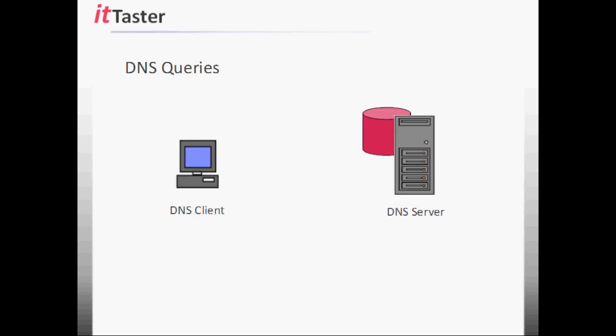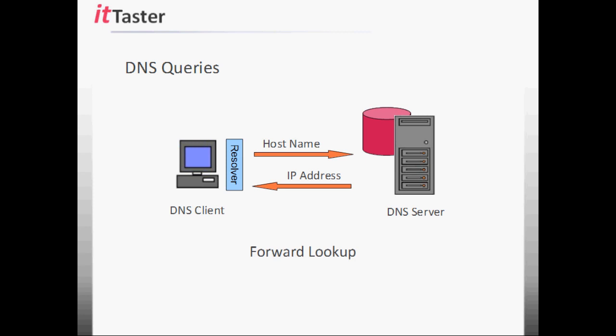In this example, a DNS client — in this case a PC — needs to resolve a computer name, a host name, to an IP address. DNS clients run something called a resolver. This is an application normally built into the operating system, and its job is to query the DNS server. The resolver sends a query to the DNS server to resolve the host name to an IP address. This is the most common type of DNS request and it's called a forward lookup. A forward lookup resolves a host name to an IP address.